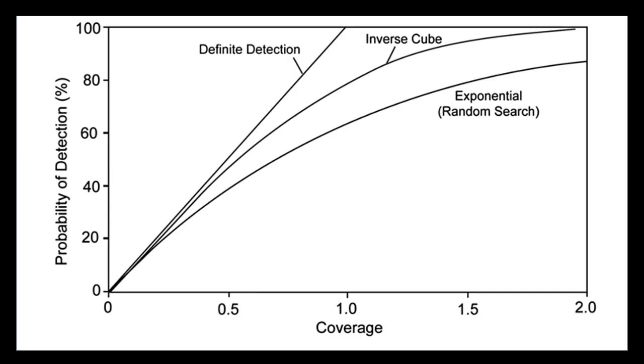The detection functions for range also have implications for the detection functions for effort. If the definite detection model were realistic, it would mean that gradually increasing coverage would result in a linear increase in the probability of detection until we reached 100%. By contrast, both the inverse cube and the exponential model have nonlinear relationships with detection probability. But the plateau for the inverse cube model is higher than the plateau for the exponential one. The exponential model also applies to random search, meaning a survey by random walk.